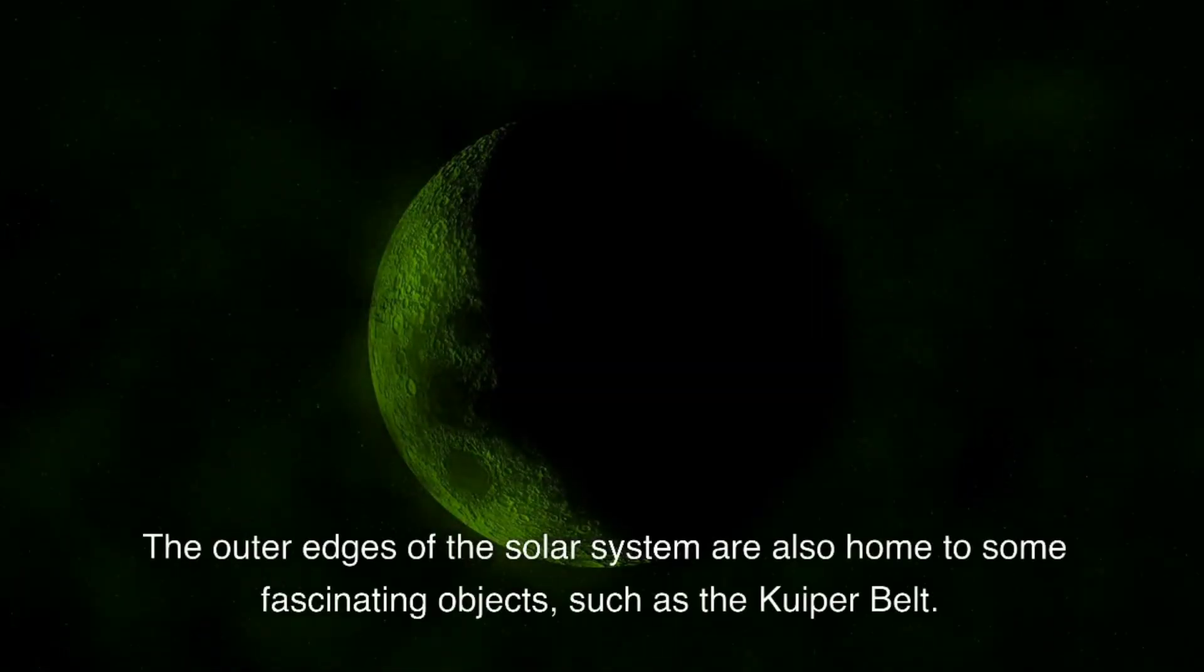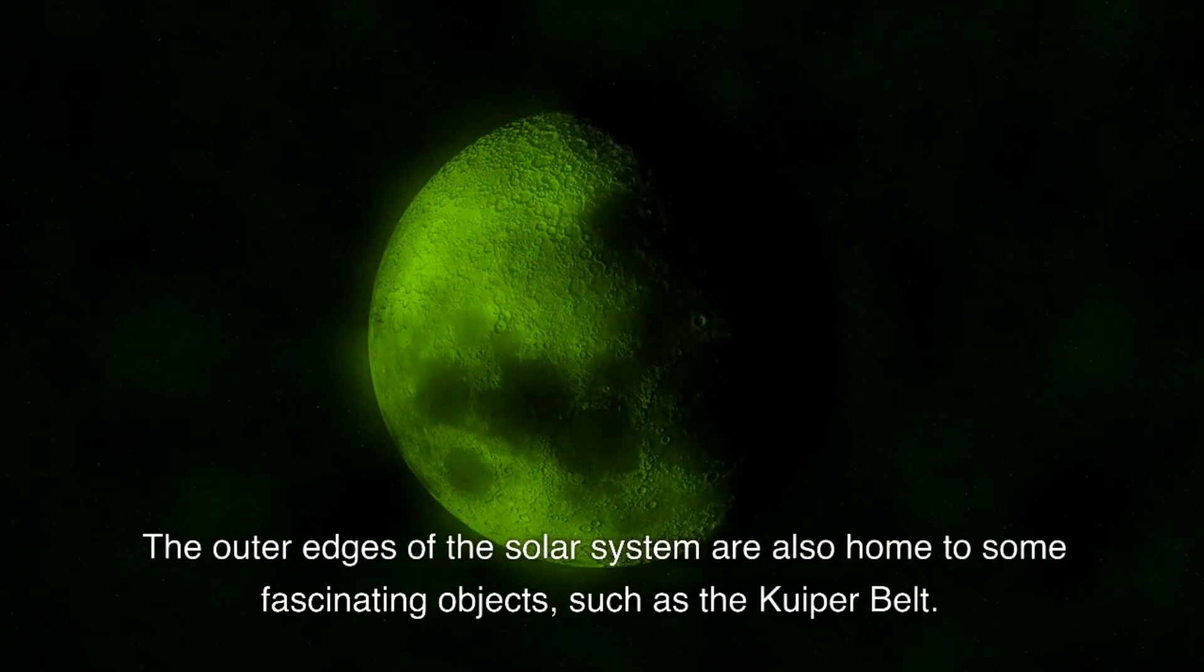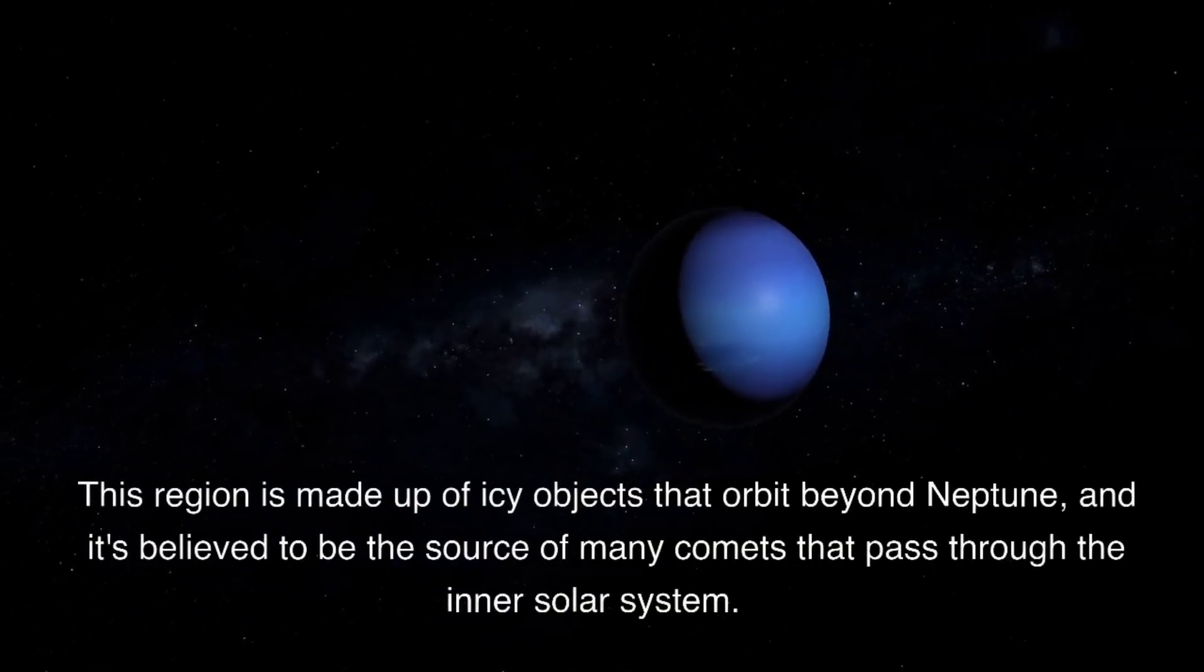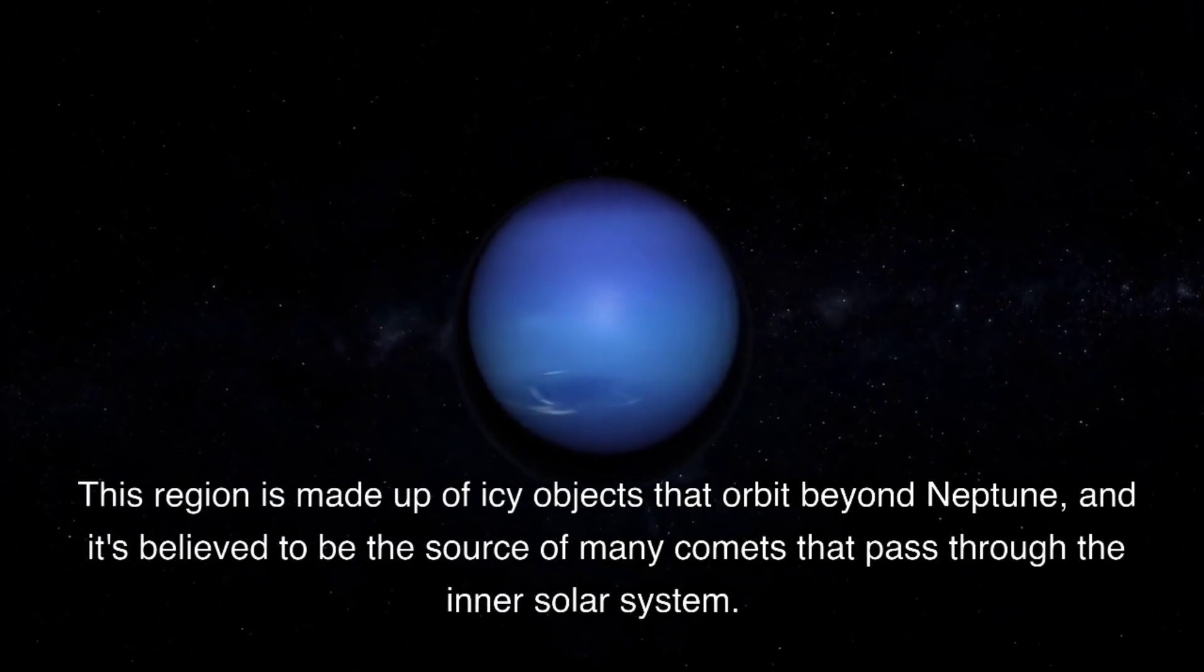The outer edges of the solar system are also home to some fascinating objects, such as the Kuiper belt. This region is made up of icy objects that orbit beyond Neptune, and it's believed to be the source of many comets that pass through the inner solar system.